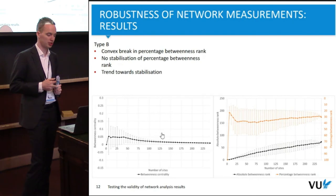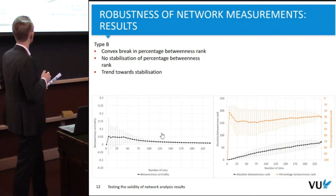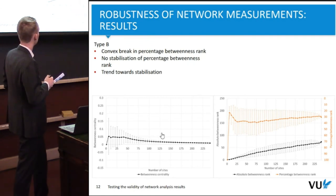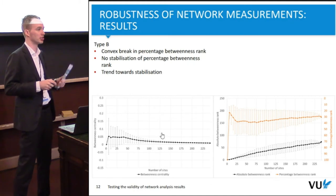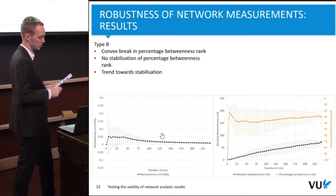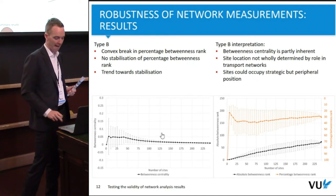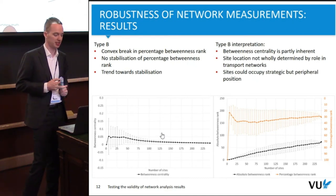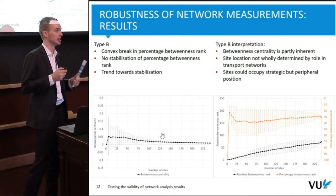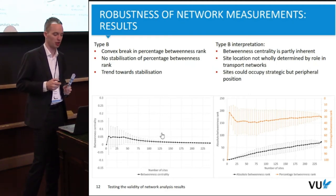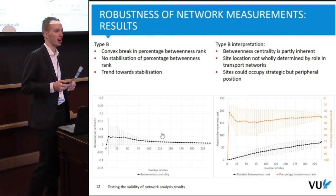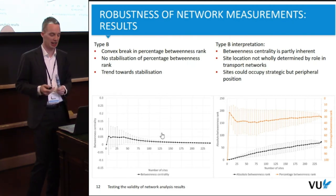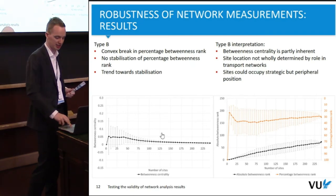Type B is characterized by a convex break but no stabilization in the percentage betweenness rank, only a trend of leveling off toward stabilization. I interpret this as meaning that betweenness centrality is perhaps partly inherent, but the site's location is not wholly determined by its role in transport networks — it may occupy a strategic position in the landscape but be peripheral in terms of the network itself.